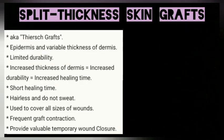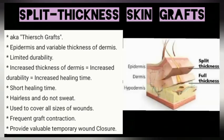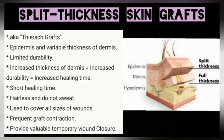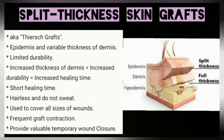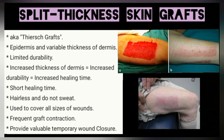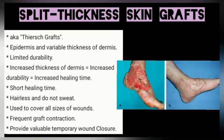Split thickness skin grafts are also known as Thiersch grafts. They consist of epidermis with variable thickness of dermis, which is why they have limited durability — the thicker the dermis, the better it embeds in the wound, but this also increases healing time. These grafts are thin, resulting in less durability compared to full thickness grafts but a shorter healing time. They are hairless, do not sweat, and since they are cut in thin slices, large grafts can be used to cover all wound sizes, though this results in increased graft contraction.